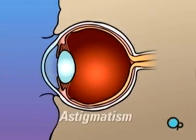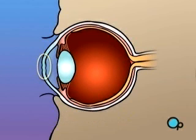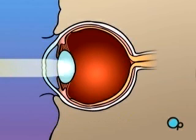Astigmatism occurs when the cornea is unevenly curved, causing light rays to fall off-center or not to focus properly at all.